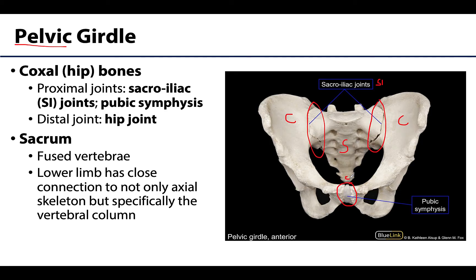The coxal bones articulate with the head of the femur at the acetabulum, forming the hip joint. Similar to the shoulder joint, the hip joint is a ball and socket joint and is thus highly mobile, but it doesn't have the same degree of range of motion as we saw in the shoulder.